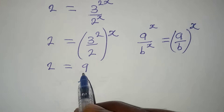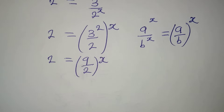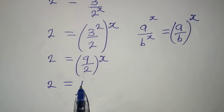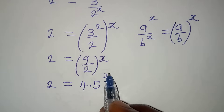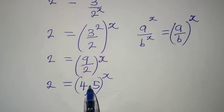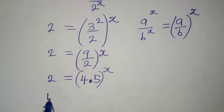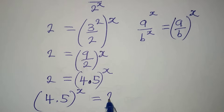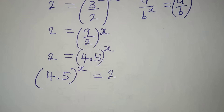So we have 2 equal to 9 over 2, to the power of x. Dividing 9 by 2 gives 4.5, and this is raised to the power of x — note this is a decimal point, not multiplication. So we have 4.5 to the power of x equal to 2.